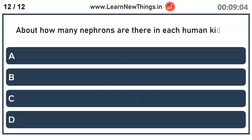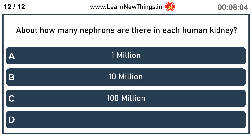About how many nephrons are there in each human kidney? One million.